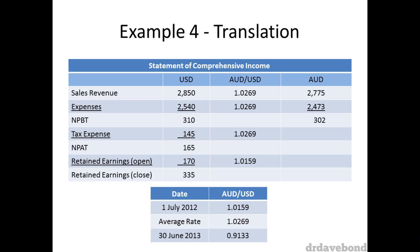This makes sense when we get to retained earnings close because it's comprised of line items using different translation rates. Sales, expenses, and tax expense use the average rate, whilst retained earnings open uses the opening rate.